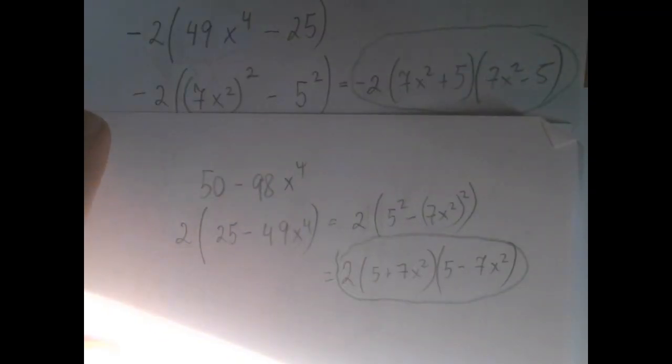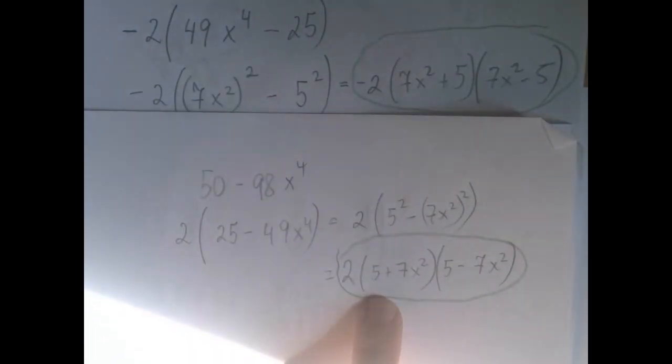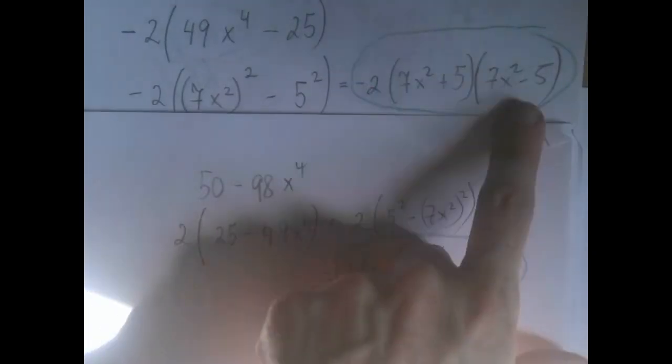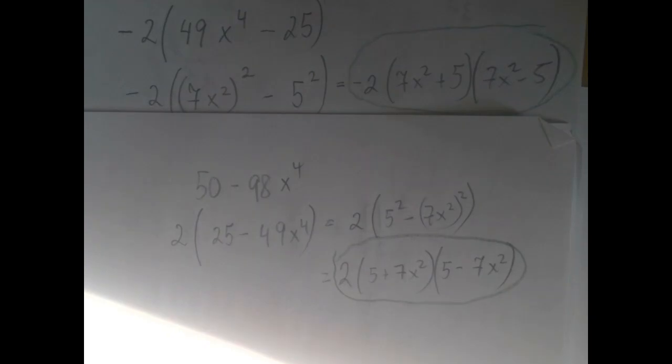The two answers, although they appear different, they are not really different. Clearly, 7x squared plus 5 is the same as 5 plus 7x squared. And if we distribute the minus 1 into this factor, we get that factor. So the two answers look different, but they are the same correct answer.